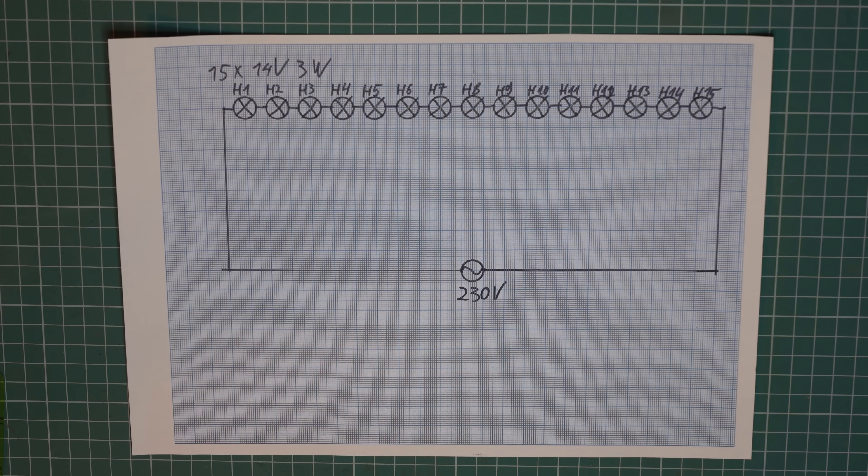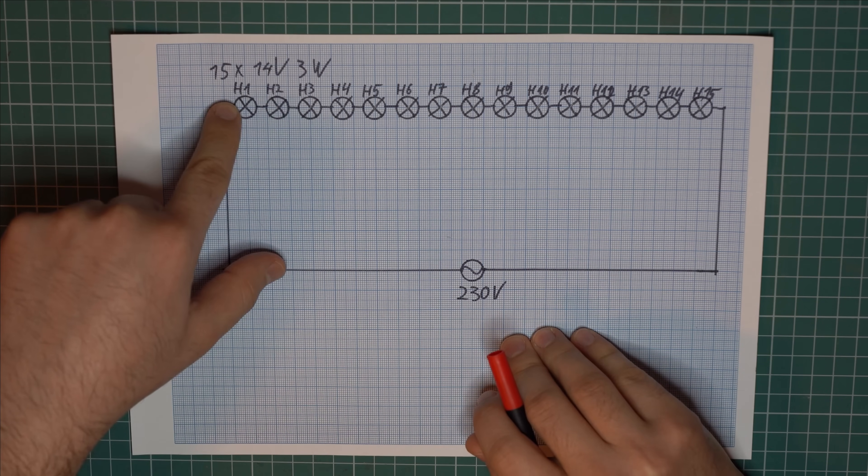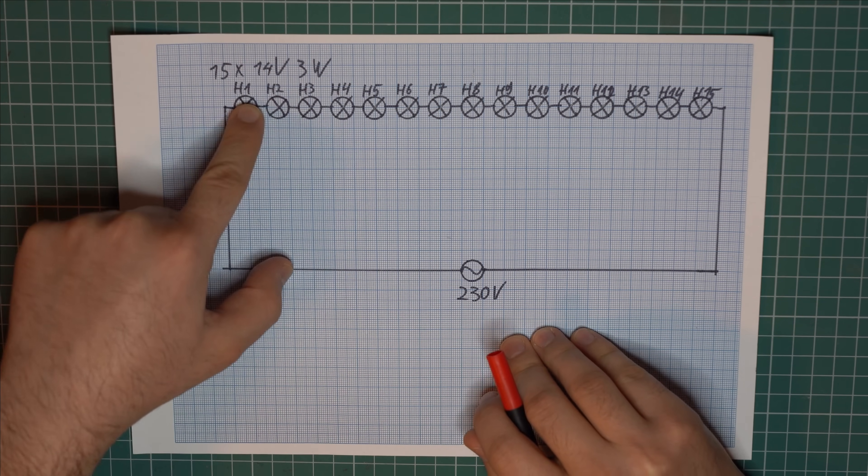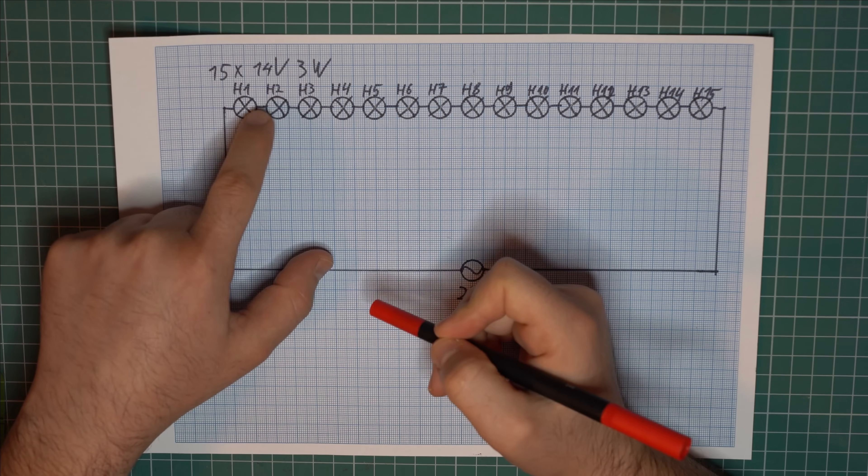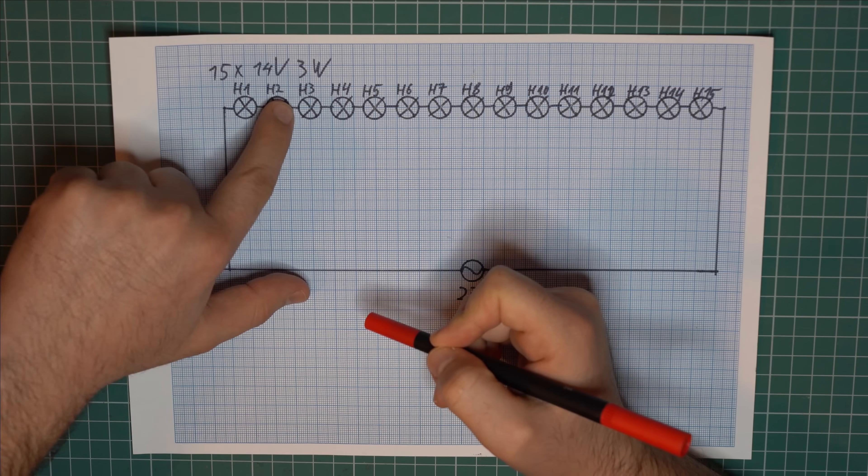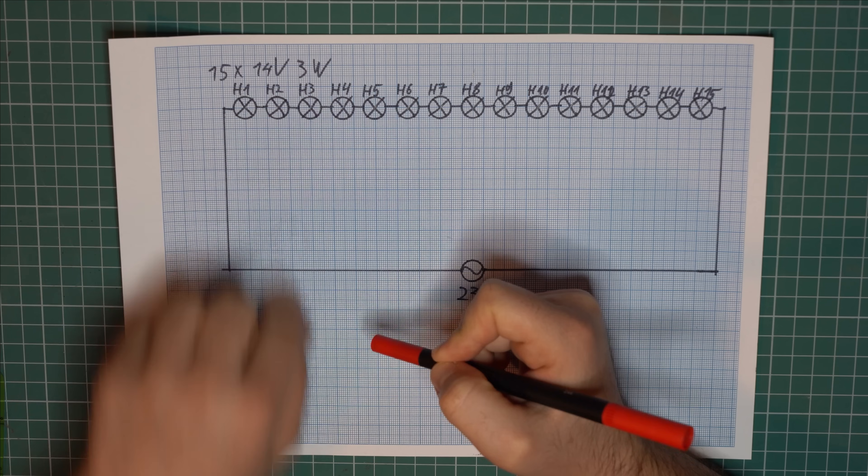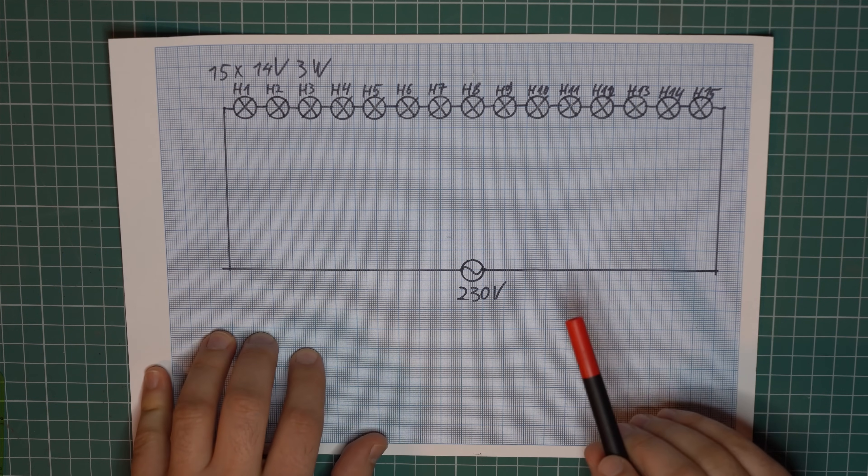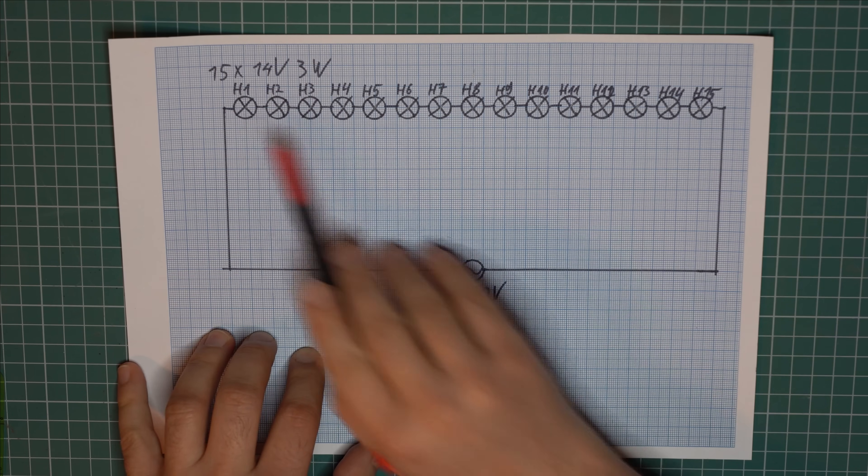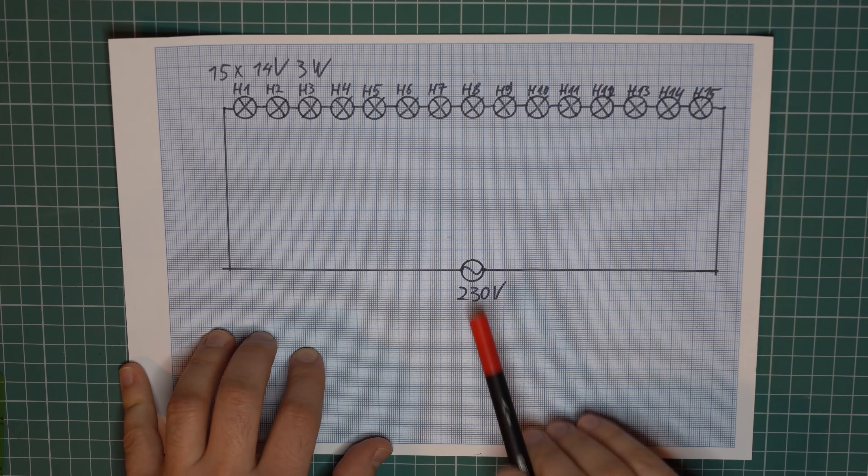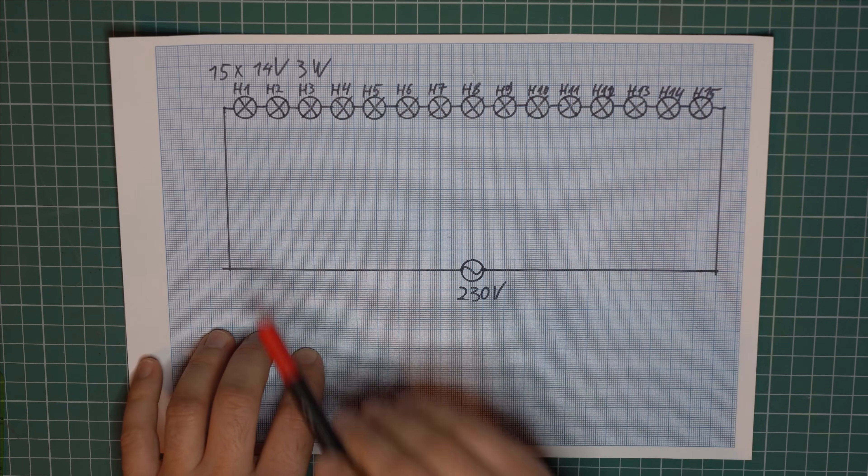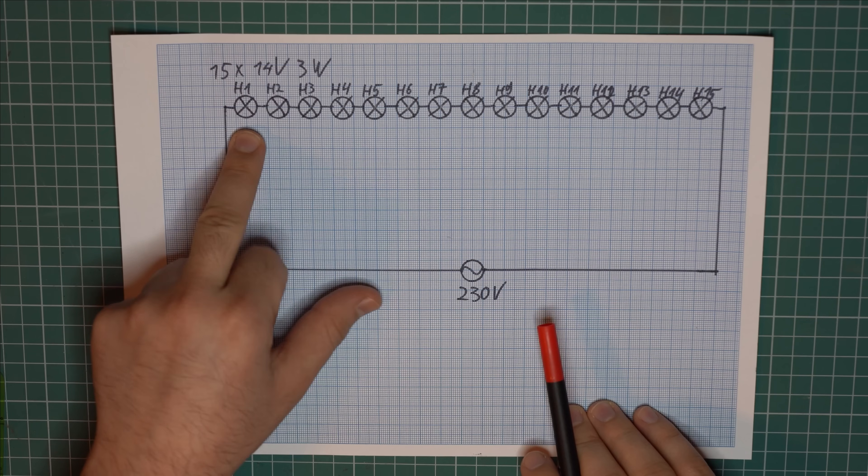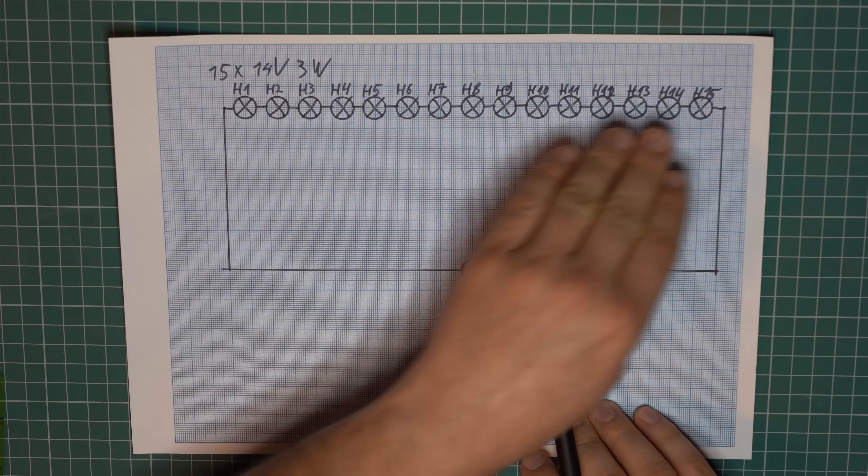Now in normal operation current coming from the mains flows through the first light, has nowhere else to go except for the second light. The current exiting the second light can only go to the third one and so on. Which means that all the lights share the same current. And when they all share the same current and they are all identical, the mains voltage spreads equally across every single light. So every single light gets around 16.6 volts in normal operation.